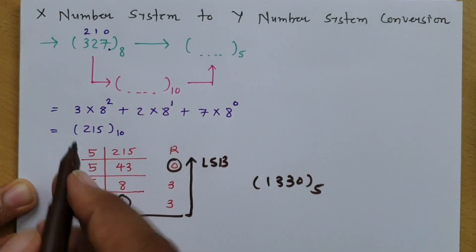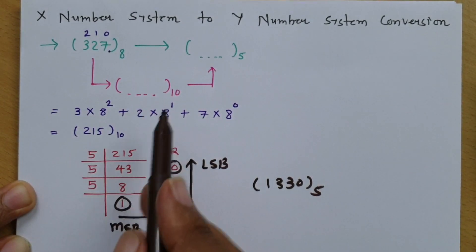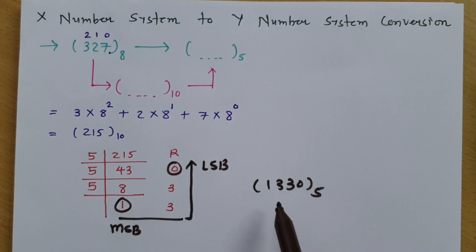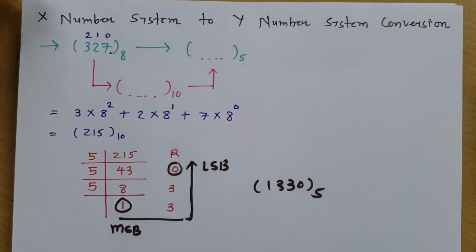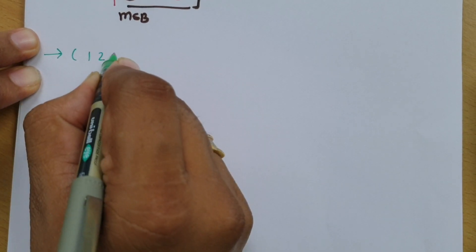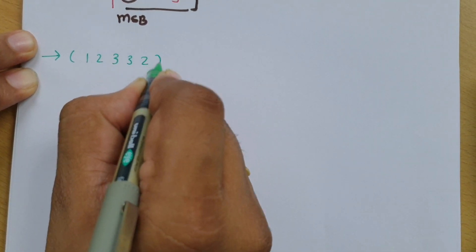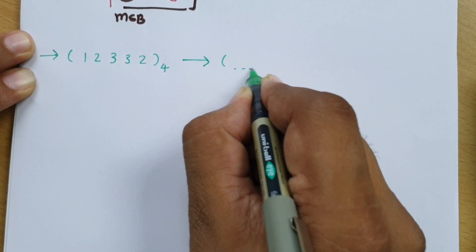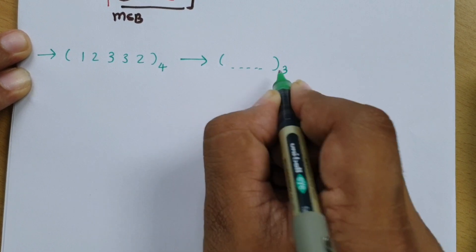So from octal to decimal and then decimal to base 5 — that is how we perform the task. Let us take one more question for a clearer idea. The second question is: we have 12332 in base 4 and we need to translate that into base 3, which is the ternary system.